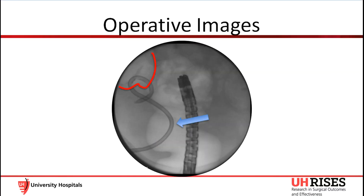We began by advancing our standard gastroscope per rectum into the rectal stump. There was obvious breakdown on the right side of the rectal stump. Note the extraluminal air outlined in red. A suture foreign body was also noted at this site. There was communication into an adjacent space presumed to be the pelvic abscess. The existing IR drain, shown with the blue arrow, appears to be in communication with the abscess.